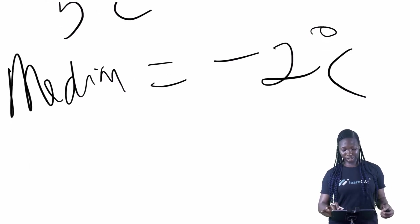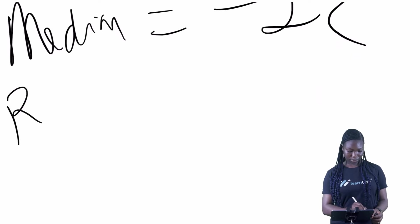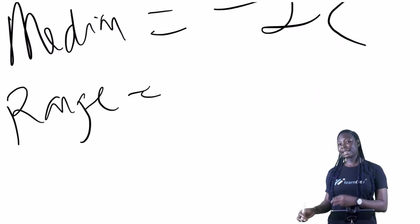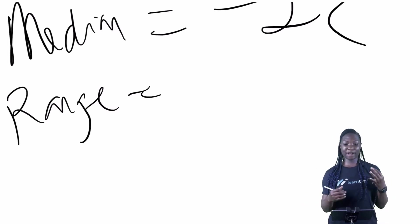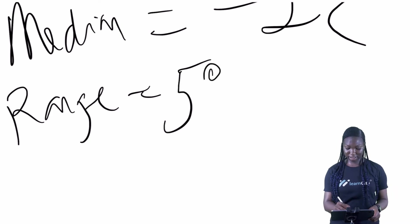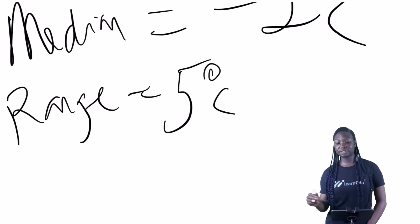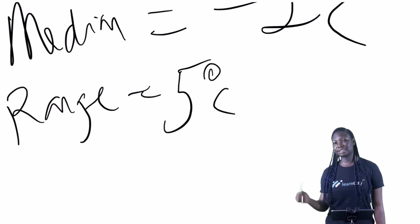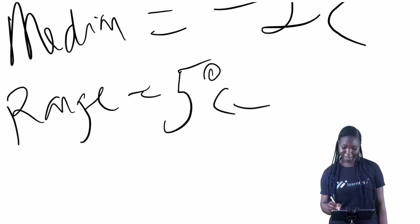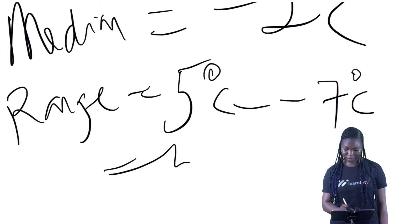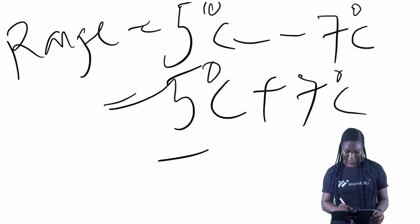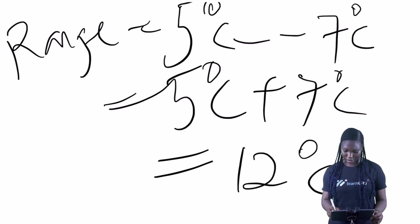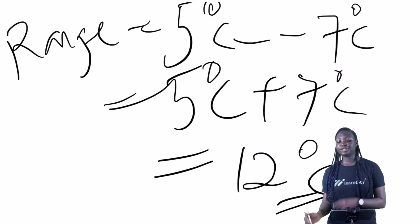And our range — the range is the highest minus the lowest. Now what is the highest value here? We have it to be 5°C, and what is the lowest value? We have minus 7°C. So we have it to be 12 degrees Celsius as our range.